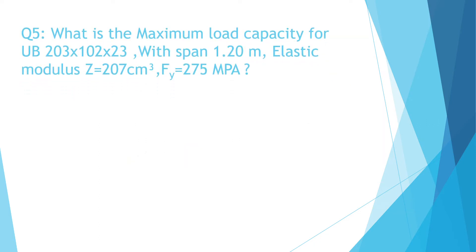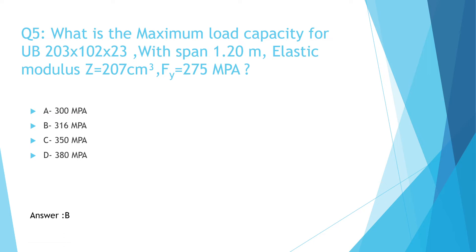Question number five. What is the maximum load capacity for a universal beam 203 by 102 by 23 with a span of 1.2 meters? Elastic modulus Z equals 207 cubic centimeters, Fy equals 275 megapascal. A: 300 kN, B: 316 kN, C: 350 kN, D: 380 kN. The correct answer is B: 316 kN. The solution steps are shown.